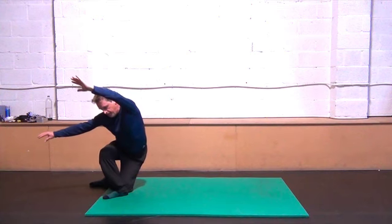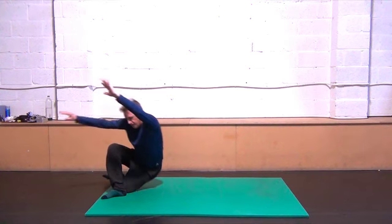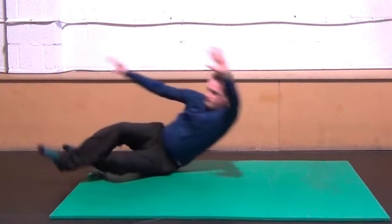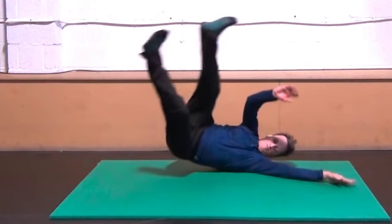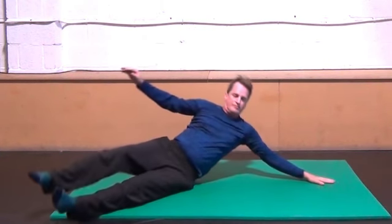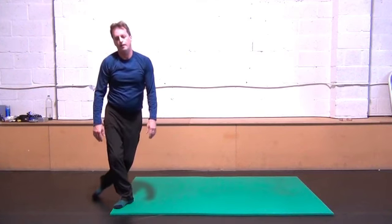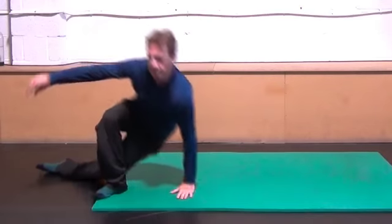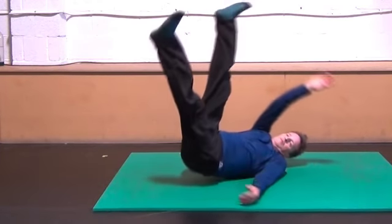When doing the side fall, maintain a strong arch throughout the move. Don't let your body collapse when you hit the floor. This will keep you from banging your ribs or your shoulder. From the arch, you then control when you let your body collapse, both your upper body and your legs.